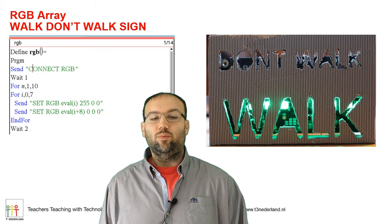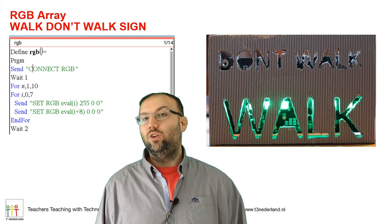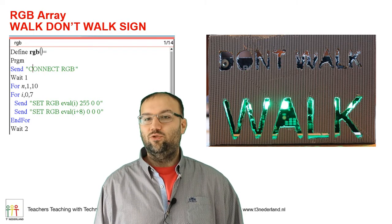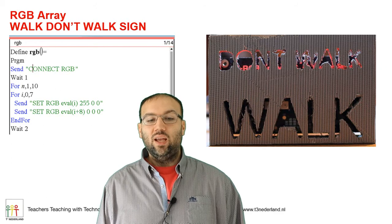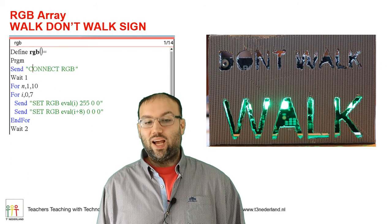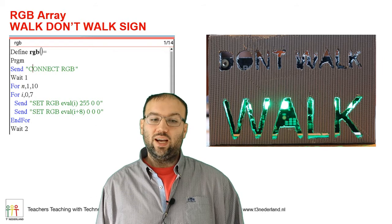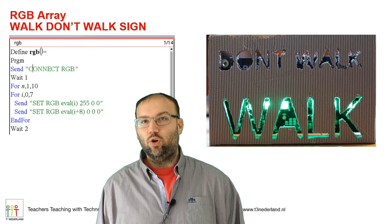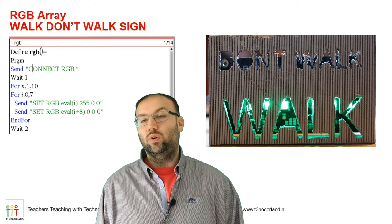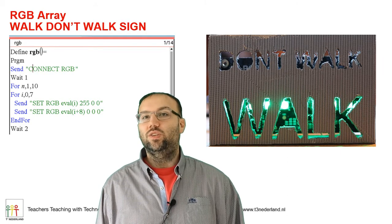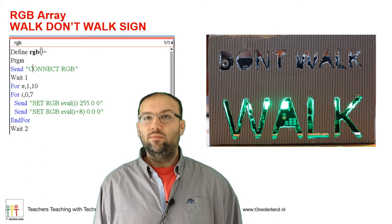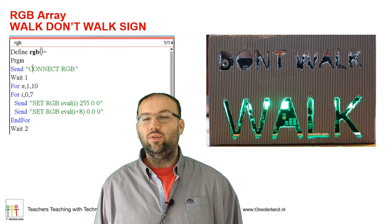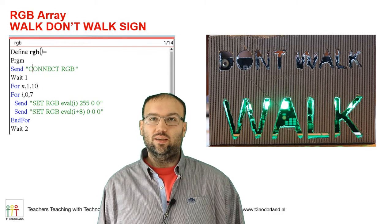Then there's a for loop from 0 to 7 — that's for the first row to drive the LEDs on. So there's set RGB array value of i to 5, 5, 0, 0 — setting the LEDs one at a time to red. And i plus 8, so LEDs 8 to 15 are set to 0, 0, 0 — turning the second row off. So the first row is red and the second row is off, meaning the don't walk sign is on.